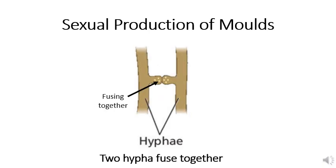For the next stage of the sexual reproduction of molds, the two hyphae — now we can call them hyphae because they're plural — fuse or join together at a particular point. This particular point is where we're going to see a zygote spore eventually form, so this point of meeting or fusing together is going to be very important as we move on.